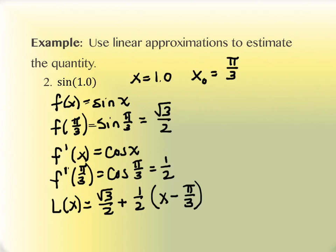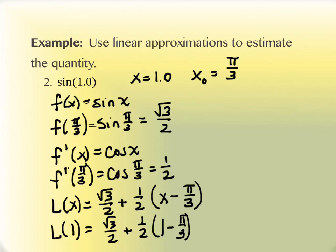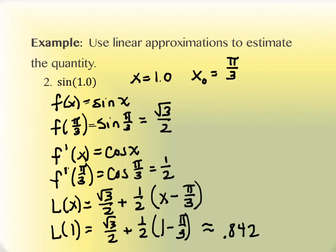We want to evaluate this at x = 1, so L(1) = √3/2 + (1/2)(1 − π/3). If we put this in the calculator and simplify, we get approximately 0.84243. If you use your calculator with the sine function to find sin(1), you get 0.84147. They're correct to the first two decimal places; it's the thousandths place where they differ, and this one won't round to being correct. But we are still correct to the hundredths place.